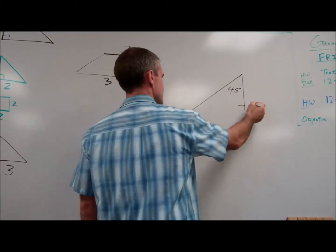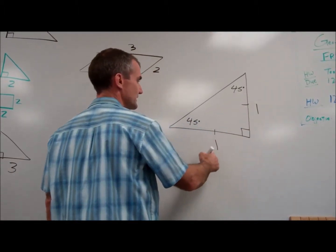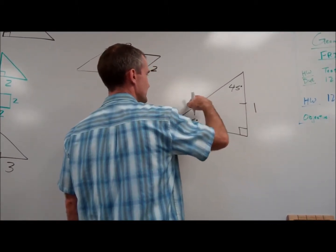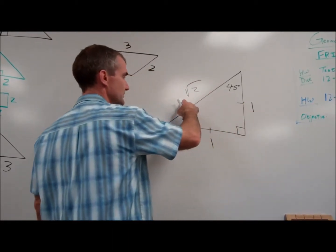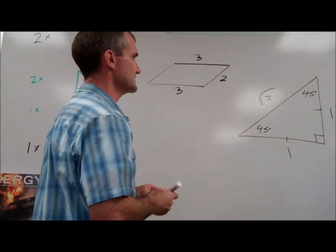These two legs are the same, so if they were each one, this would be one, one, and this would be one root two. Again, if this is ten, this would be ten, ten root two. Those similar triangles are always the same.